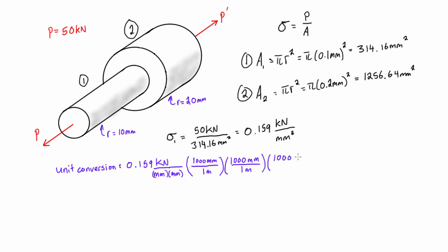If you do the unit conversion here, you'll see that we actually get 159 million newtons per meter squared, which is 159 times 10 to the 6 pascals. When we have pascals times 10 to the 6, this is the same thing as 159 megapascals. That would be the normal stress at any point within section 1.